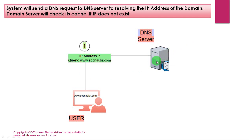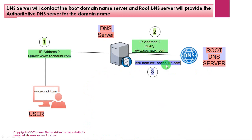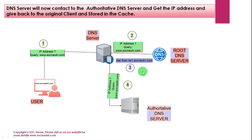The domain name server will check in its cache. If the IP does not exist there, the DNS server will contact a root domain name server. In the world, there are only 13 root DNS servers available. The root DNS server provides the authoritative DNS server for the domain name, which is the main DNS server holding the entries for the domain and its associated IP address.